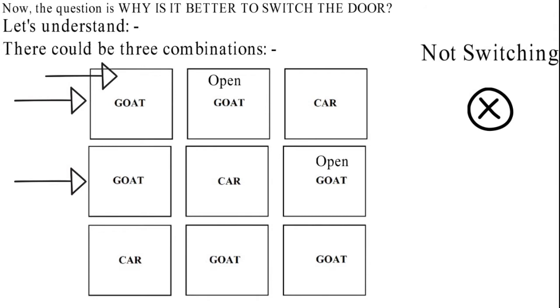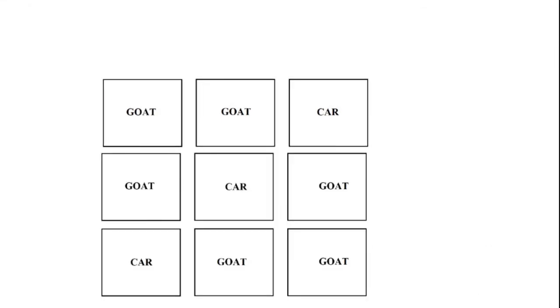But I still stick to the gate number one and end up with a goat. In the third case I again choose the gate number one and the host opens up the gate number three and I still stick to it and I finally get a car.